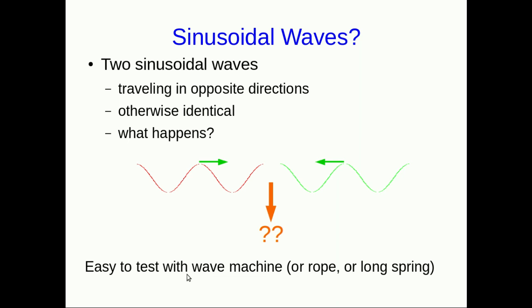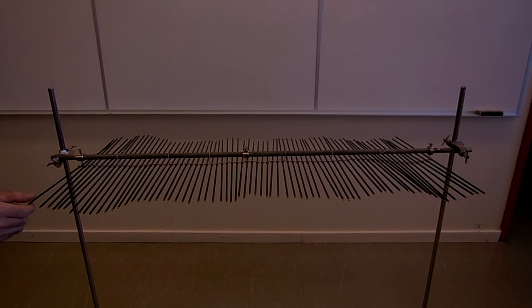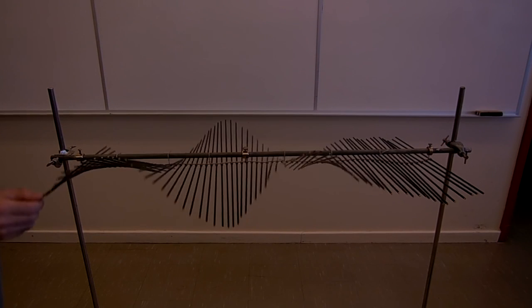Because if we just send sinusoidal waves down the wave machine, they're going to get to the other end and reflect back. And now the reflected ones are going to interfere with the ones that we're sending, and we'll have this situation. So we can see exactly what it looks like using a wave machine. We could also use a rope or a long spring. So here is the wave machine. And here I go sending waves down it, and watch.